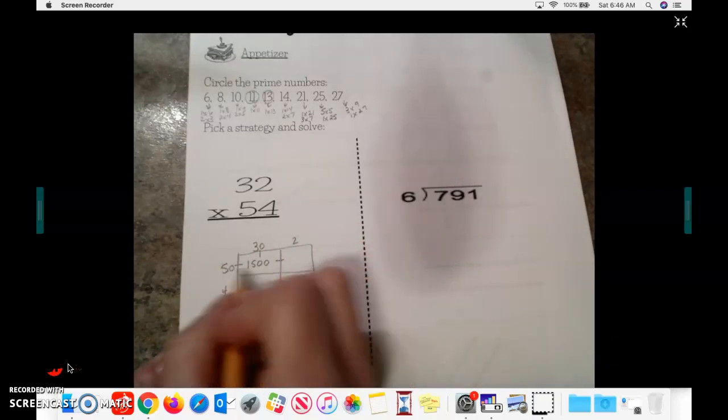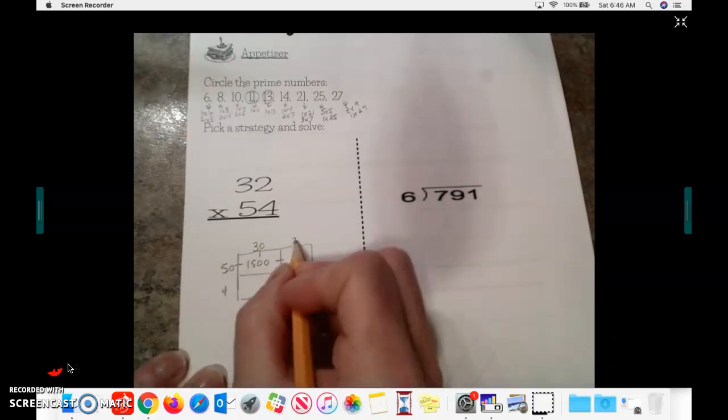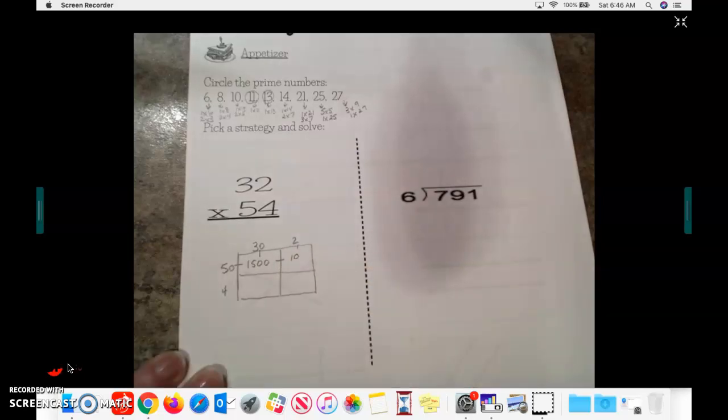Then I'm going to have 50 times 2. 5 times 2 is 10. Then I still need to add that additional zero from the 50 because it is 10 more, so that makes it 100.